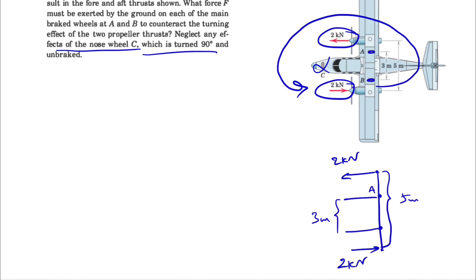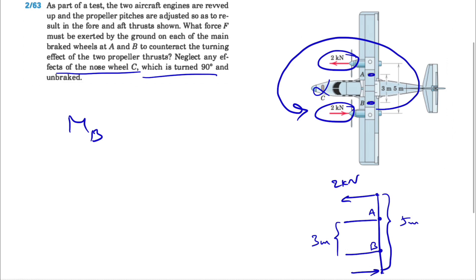So we know that this point is A and this point is B. What we are trying to achieve in this question is to have the moment equation, regardless of which point, equal to zero. Let's just go with point B, then we can cancel out one of these forces. From the question, we know that the force in A and B is the same and they're both F.